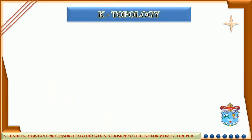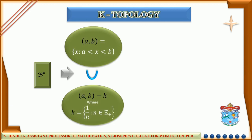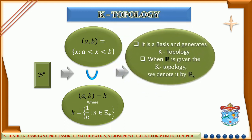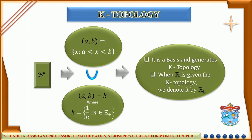Finally, we will see the definition of K-topology. Let B'' be the collection of all open intervals (a, b), along with all sets of the form (a, b) minus K, where K is the set of all elements of the form 1/n, where n is a positive integer. Then this collection script B'' is the basis, and the topology generated by B'' is called the K-topology on R. When R is given this K-topology, we denote that R by R_K.